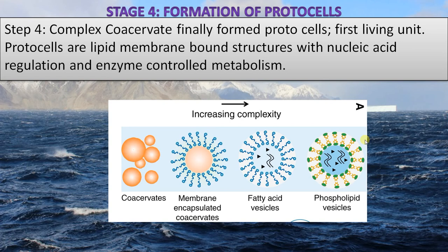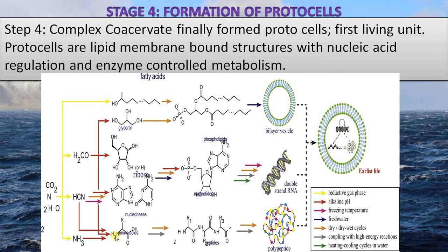In summary: inorganic molecules combined to form monomers in the first step — glycerol and fatty acids for lipids, nucleobases and ribose sugar for nucleotides, and amino acids for proteins. In the second stage, these combined to form polymers: phospholipids, nucleotides, proteins, etc. Phospholipids form the lipid bilayer essential for life; nucleic acids act as genetic material; proteins are enzymes controlling the entire metabolism — thus forming the protocell that later diversified into all forms of life.